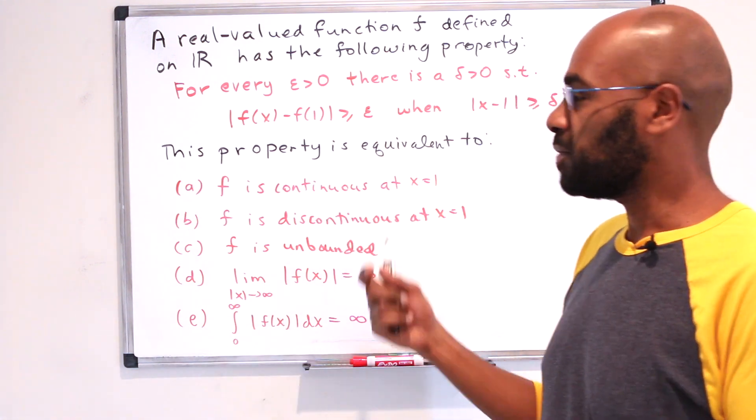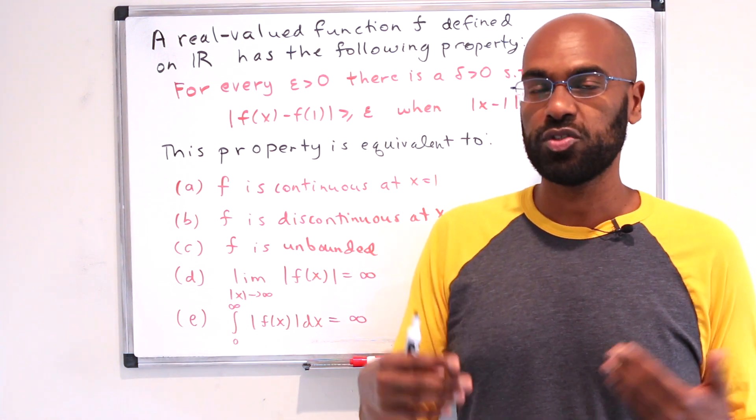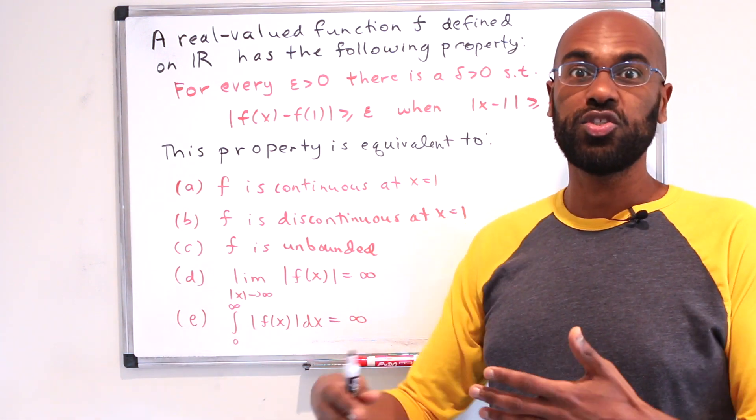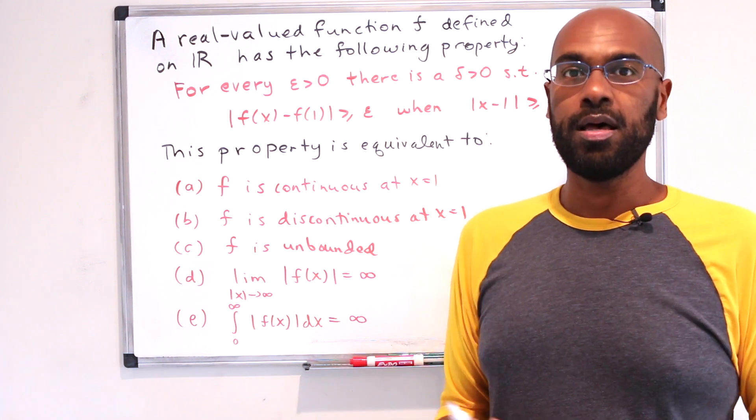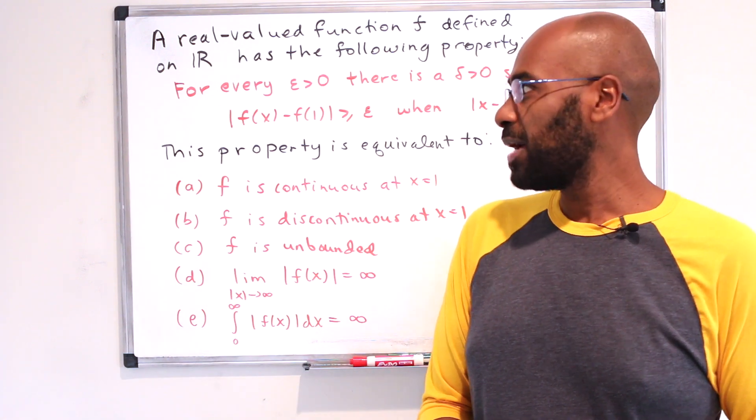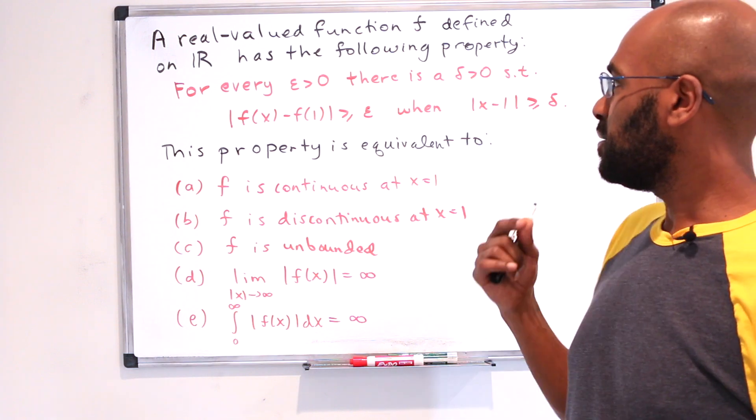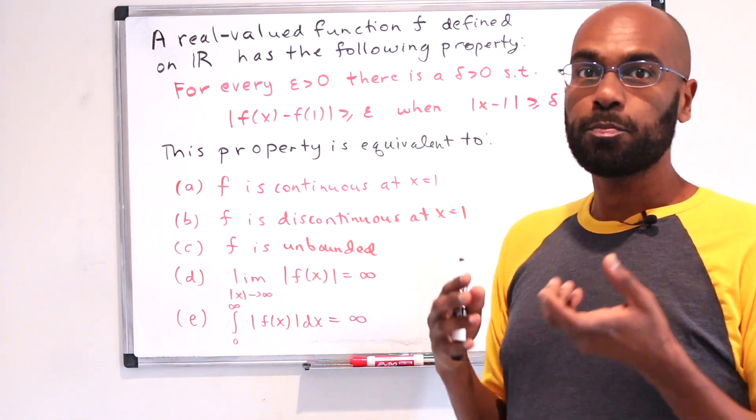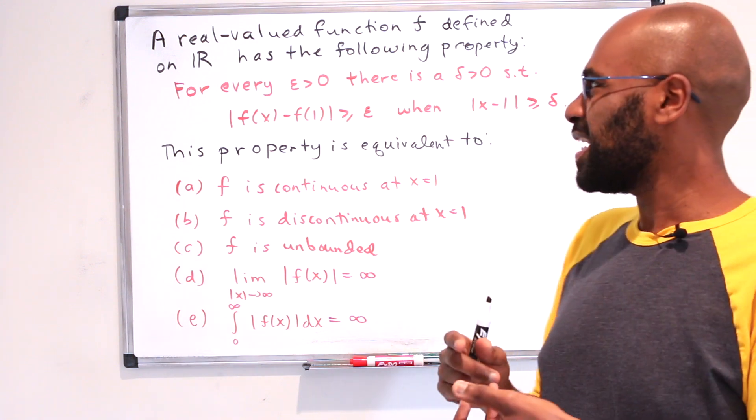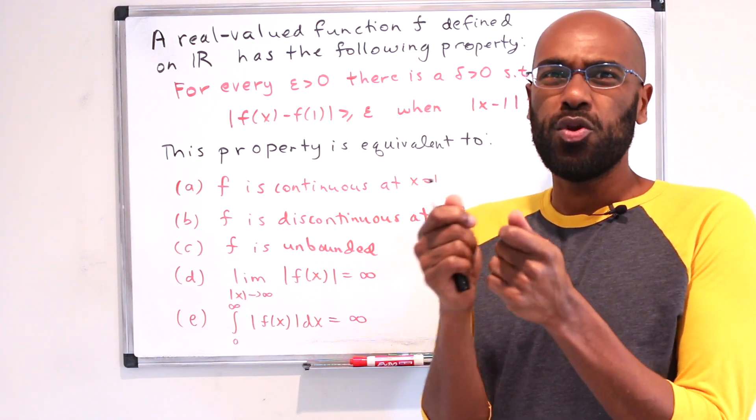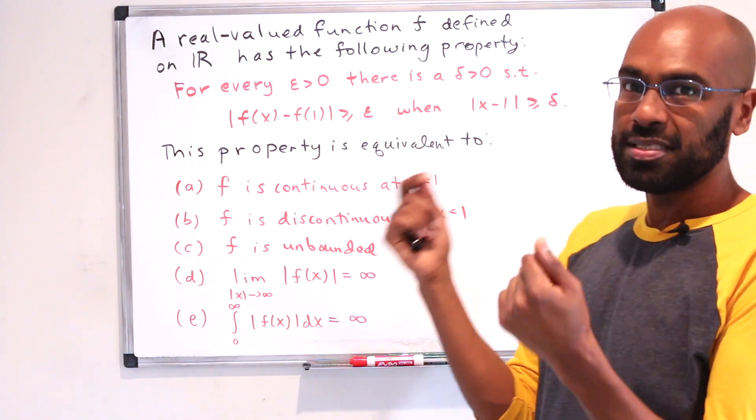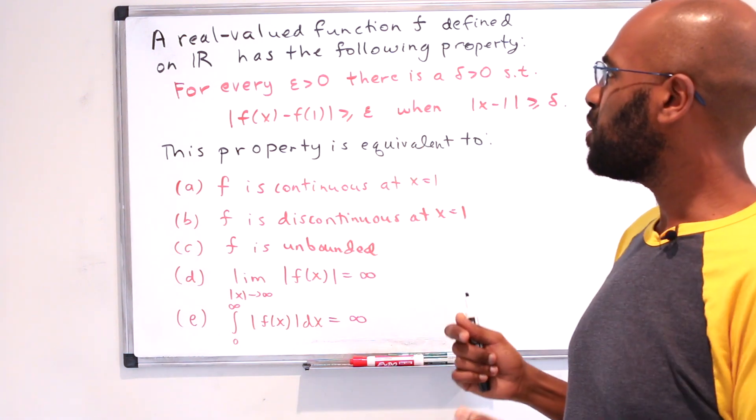Today, we're going to talk about this problem that shows up on the GRE Math Subject Test, which is a test that's used as a precursor to admissions to math graduate schools and many different mathematics programs. And this problem looks at the definition of a limit, but does a little twist on it. I think the purpose of it is to get a sense of students who understand the nuances of how the definition works in terms of the quantifiers and what the delta and epsilon actually mean.